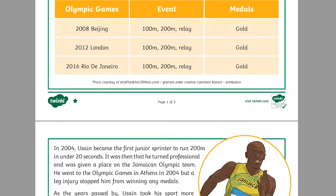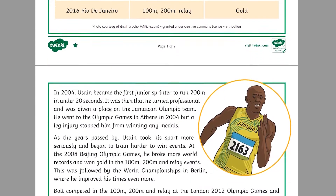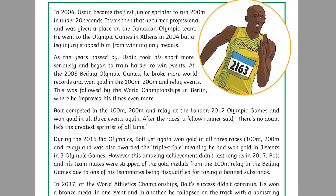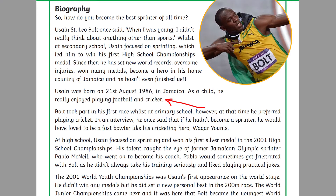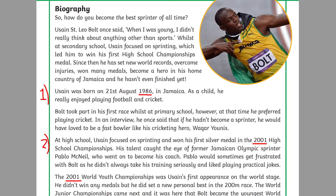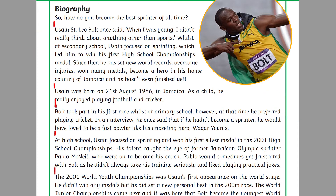Read some of the examples together and note the features of biography writing, like formal language, that it's written in the past tense and in chronological order, pictures, captions, and clear paragraphs splitting the person's life into sections.